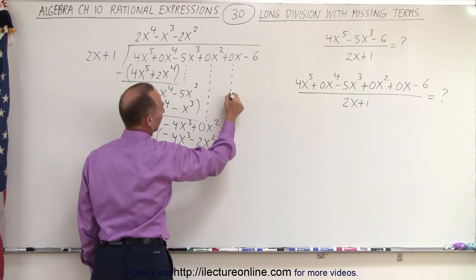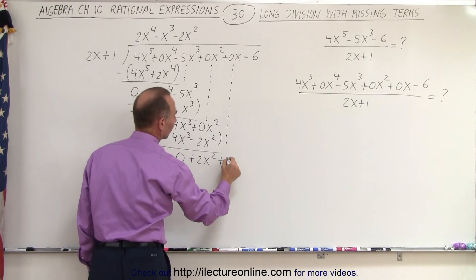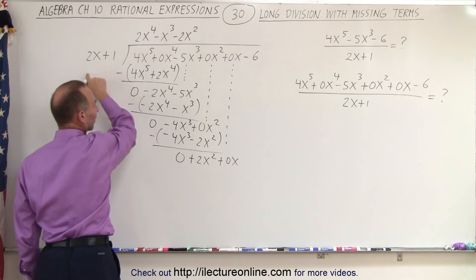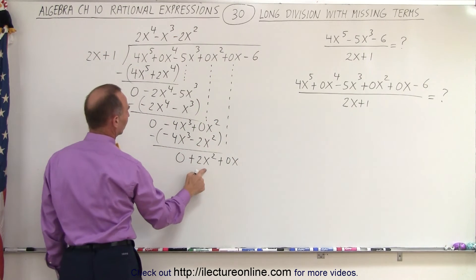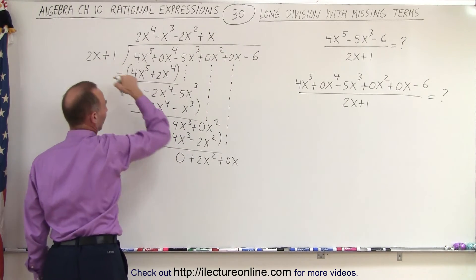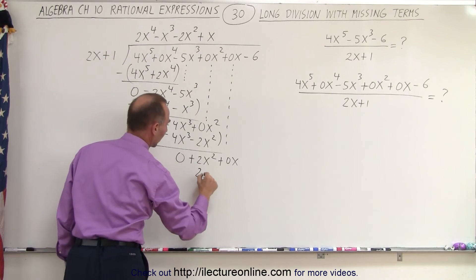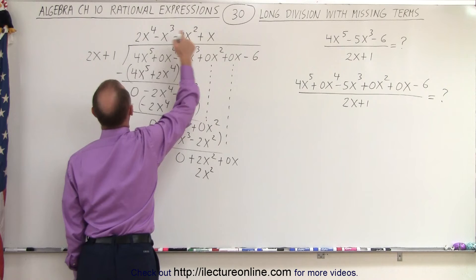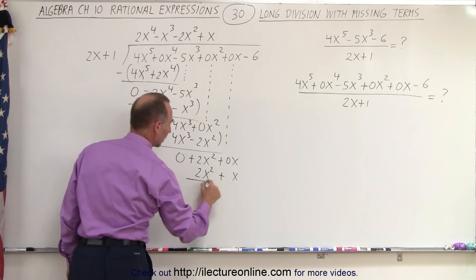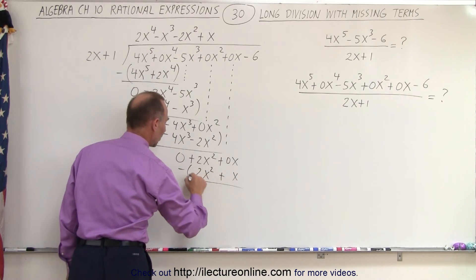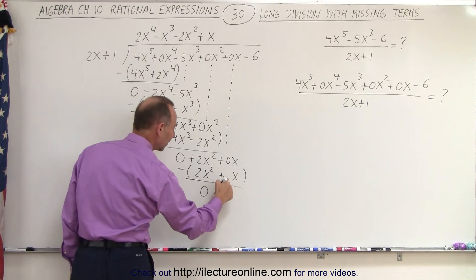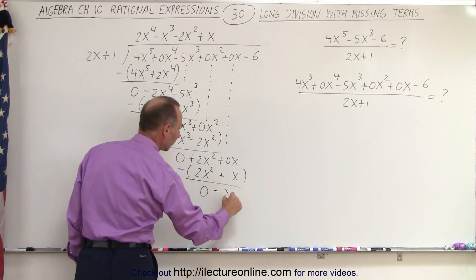Again we drop down the next term, getting plus 0x. What times 2x gives us 2x squared? It looks like plus x. x times 2x gives us 2x squared, and x times 1 gives us plus x. We subtract that from above: this minus this is 0, and this minus x is minus x.